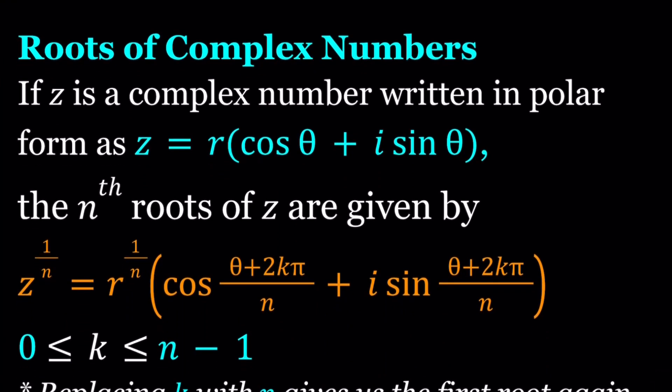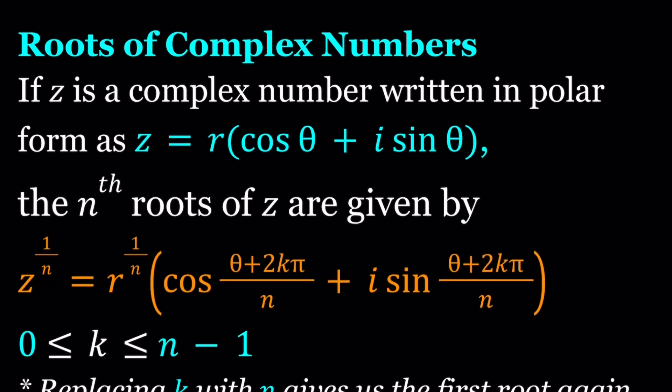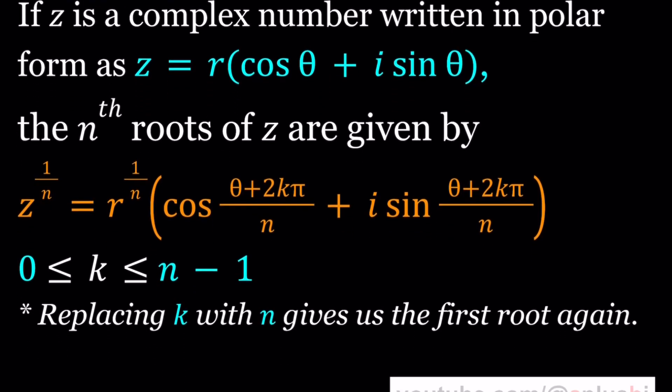So, if z is a complex number written in polar form as z equals r times the quantity cosine theta plus i sine theta, then we can find its nth roots, and there are n of them. A complex number has n nth roots. This might look a little confusing to you, but don't worry about it. Basically, this means the nth root of z. But there are n of them, so this is kind of like something that is multi-valued. That's why we have different k values.